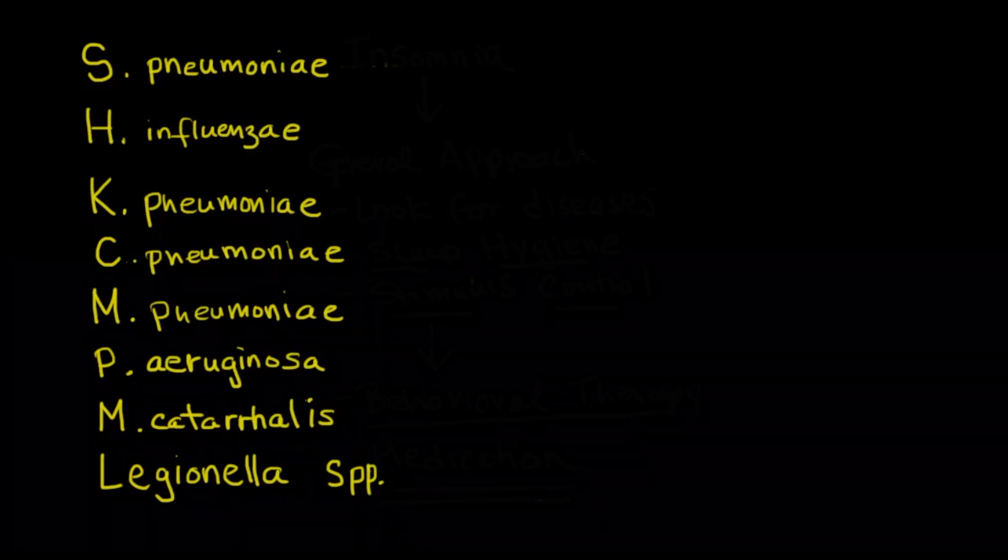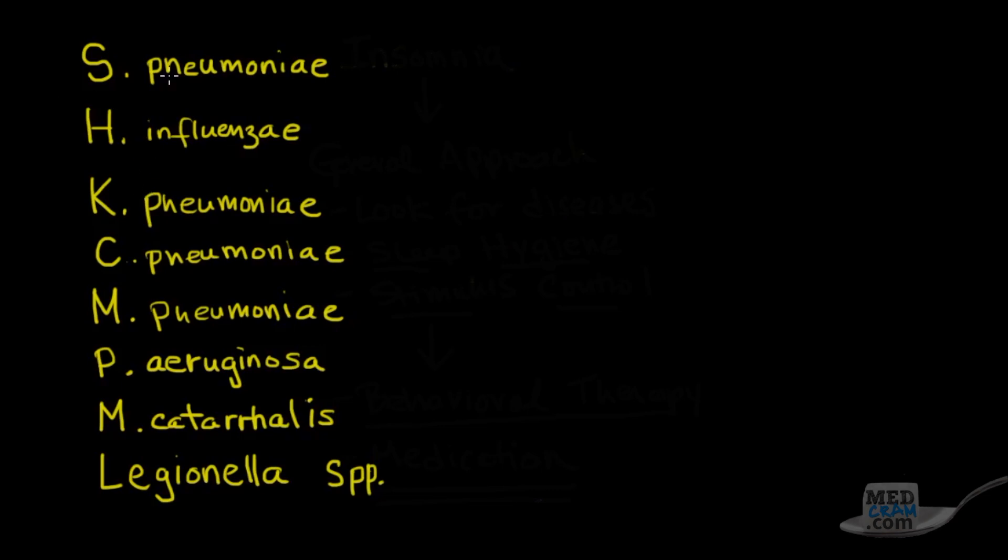So I wanted to go over these eight different bacteria and their characteristics. The first thing you should know is that Streptococcal pneumoniae is actually the most common bacterial cause for pneumonia. So right off the bat, that is the biggest thing you should know. And if you'll remember, on a gram stain, they're going to look like gram positive cocci in pairs.